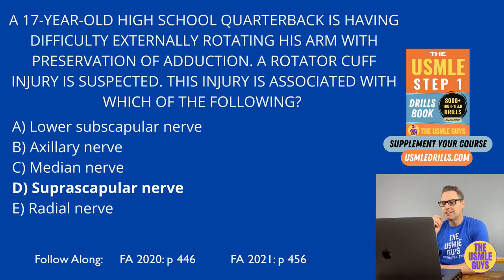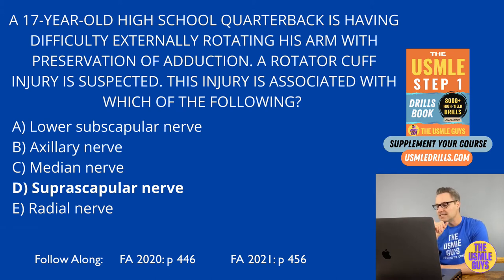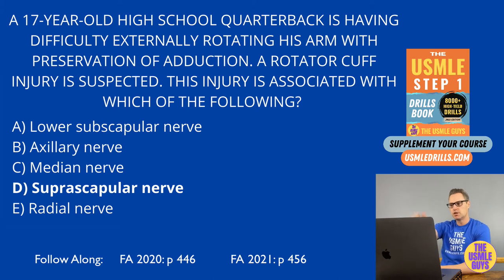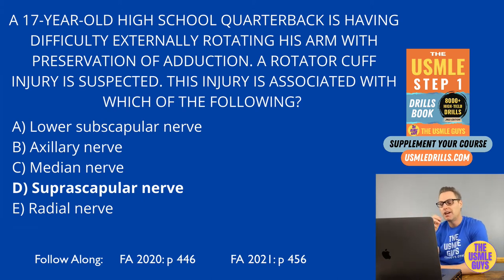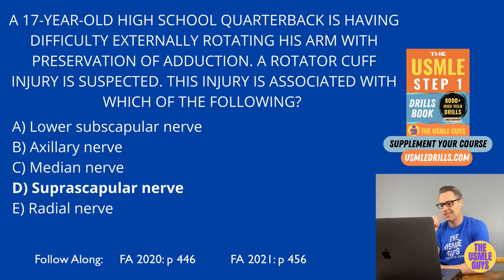This particular question mentioned difficulty with external rotation of the arm, for which the infraspinatus is responsible. This type of injury is seen with repetitive throwing motions — think of a quarterback or a pitcher in baseball. This muscle is innervated by the suprascapular nerve, just like the supraspinatus.